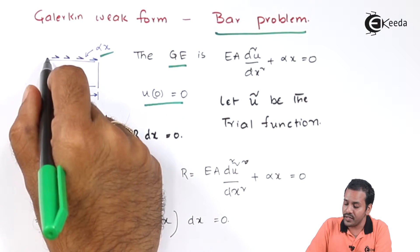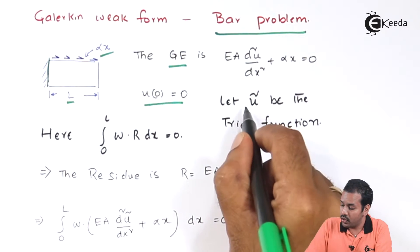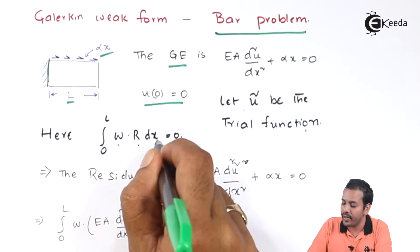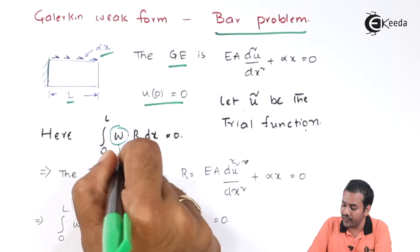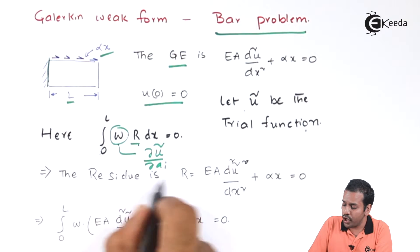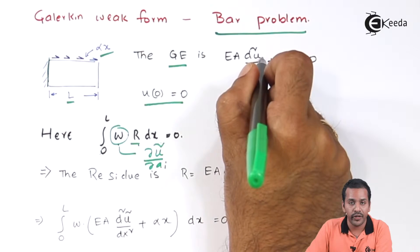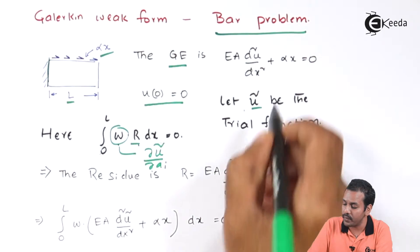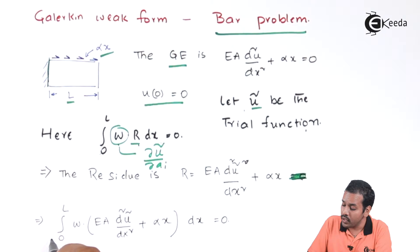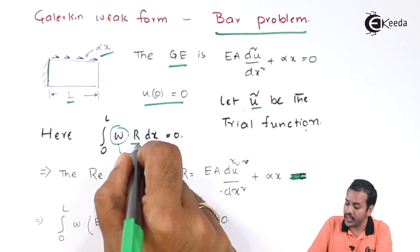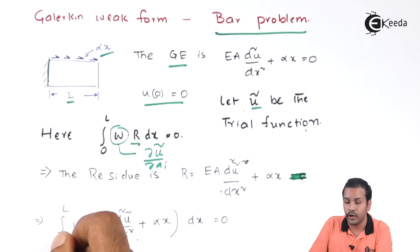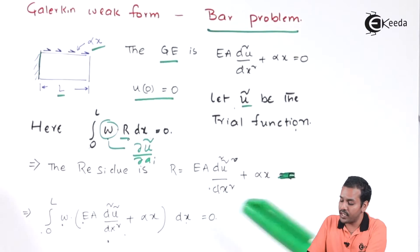The boundary condition is u(0) = 0. Let u-tilde be the trial function. According to the Galerkin method, the weighted residual integral from 0 to L — weight multiplied by residue, dx — equals 0. The residue is obtained by substituting the trial function into the governing equation: r = EA·d²u-tilde/dx² + αx. This won't be zero — that's why it's called the residue. So we substitute: integral from 0 to L of weight × (EA·d²u-tilde/dx² + αx) dx = 0.